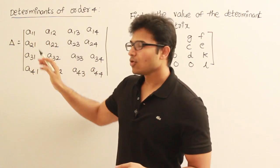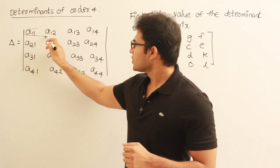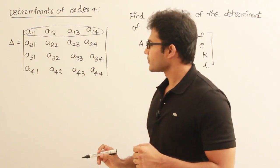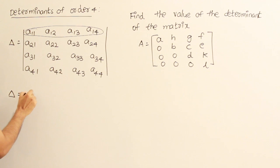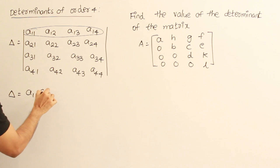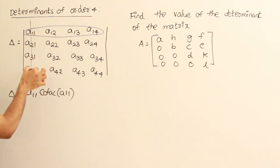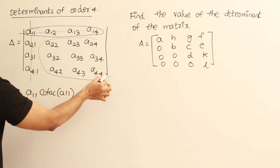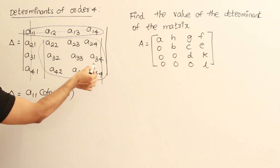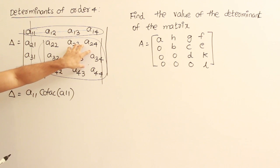You can take any row or any column and expand the determinant over that row or column. Let's see how to find the determinant across the first row. The determinant is going to be a11 into the cofactor of a11. The cofactor of a11 means you remove that row and that column, take the remaining elements, find their determinant, and multiply by minus 1 to the power 1 plus 1, because the index is 1,1. This gives again a determinant of order 3, and you know how to find that.